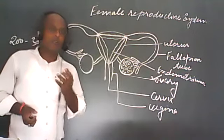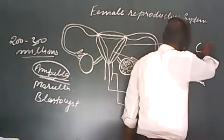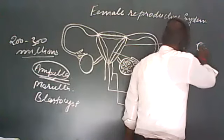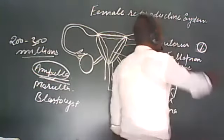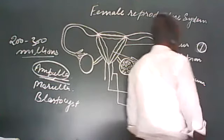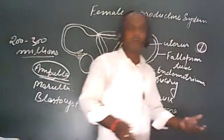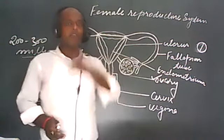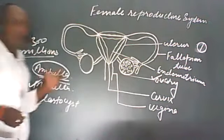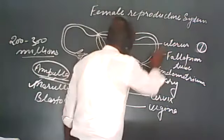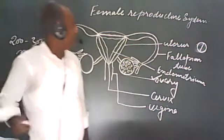The zygote starts to develop. From the zygote there will be cleavage — two-cell structure, then four-cell, eight-cell, sixteen-cell structures. The first stage after cleavage formation is the morula stage. These eggs which are released from the ovary and caught by the fimbria reach into the fallopian tube. The releasing of ova from the ovary is called ovulation.